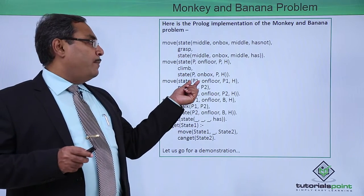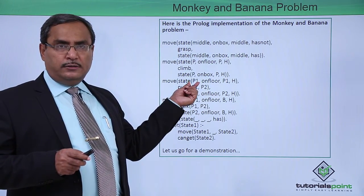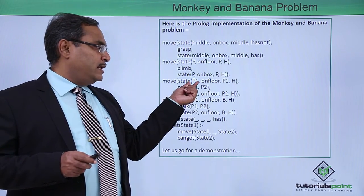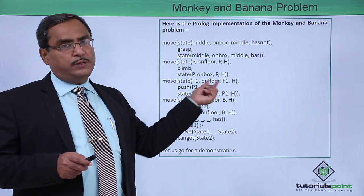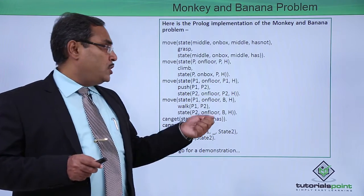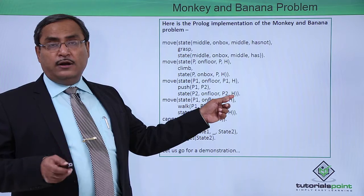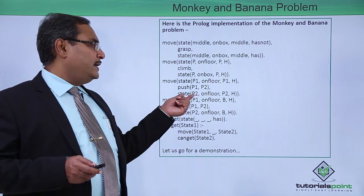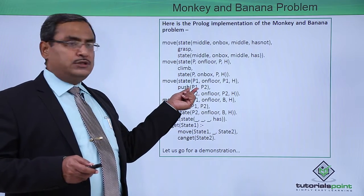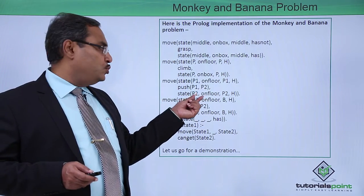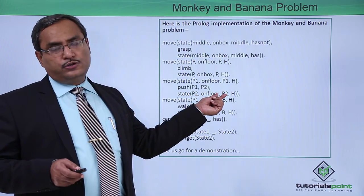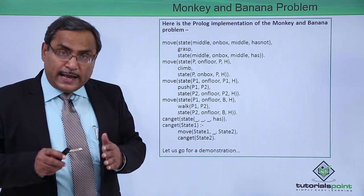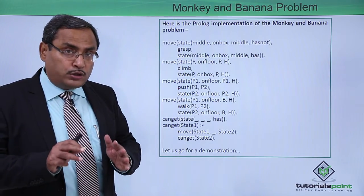For the push operation, the monkey's horizontal position and the box's horizontal position must be the same, and the monkey's vertical position must be on the floor — then only it can push. The state of getting or not getting the banana will remain the same, so H and H are two variables for that. The monkey is pushed from P1 to P2, so P2 is the new position — the monkey will be at P2 and the box will also be at P2 because the monkey has pushed the box.